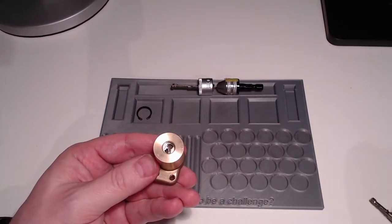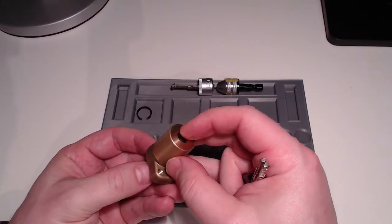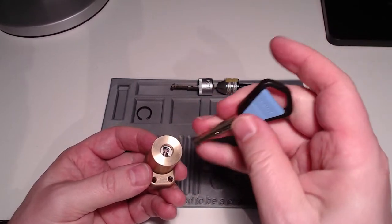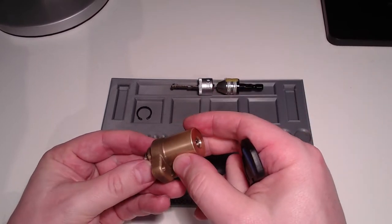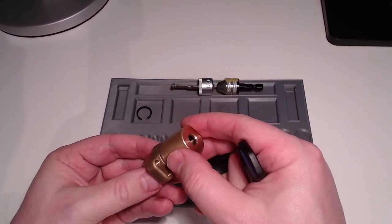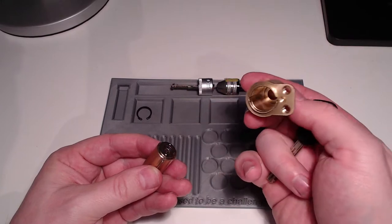Then I can get this lock core out of the cylinder, like this.